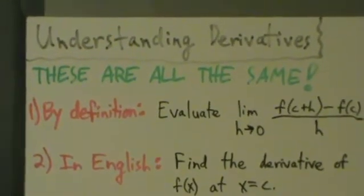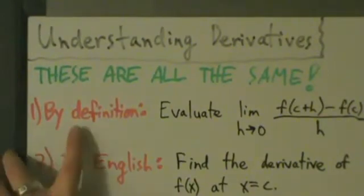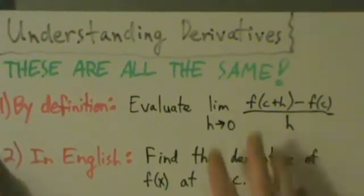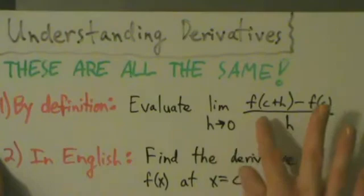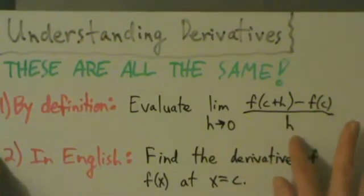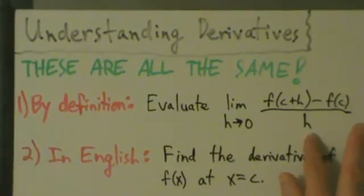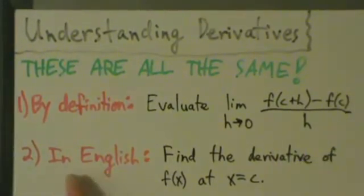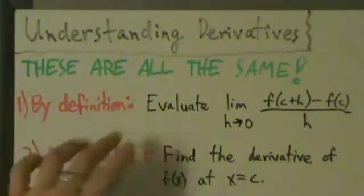The first way you can ask about derivatives is straight up by the definition: evaluate the limit as h goes to zero of f(c+h) - f(c) all divided by h. That's by definition. In words, in plain English, you could say find the derivative of f(x) at x equals c. These two are exactly the same thing.